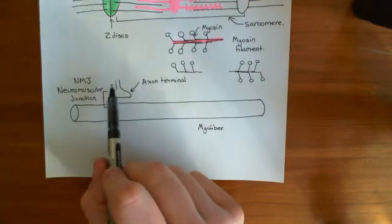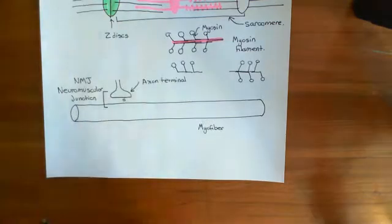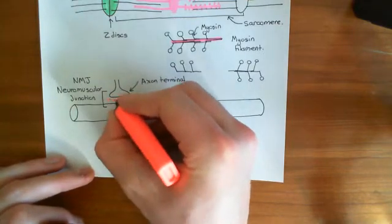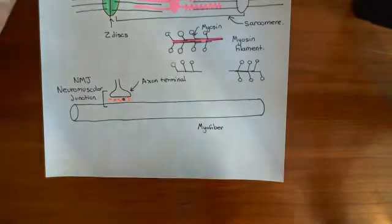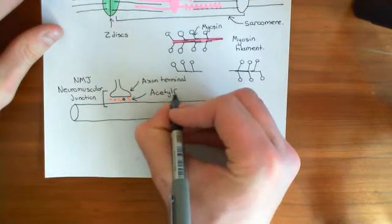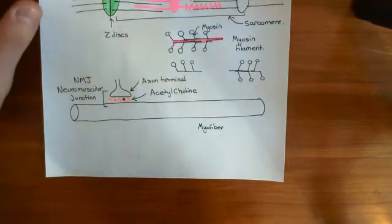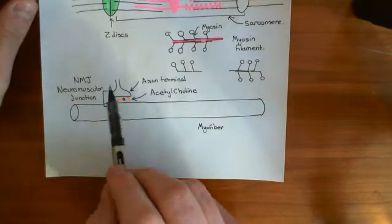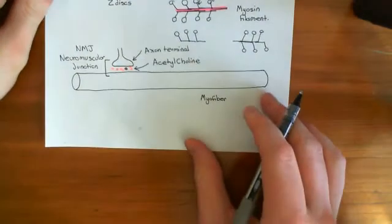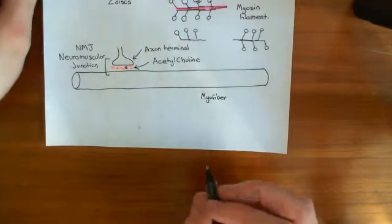What does this axon terminal release? It releases the neurotransmitter acetylcholine. Neurons which synapse with skeletal muscles always release acetylcholine — that is how they stimulate skeletal muscles to contract. So this axon terminal is going to release acetylcholine. It would be quite nice to look at the structure of acetylcholine because it's a very simple molecular structure.